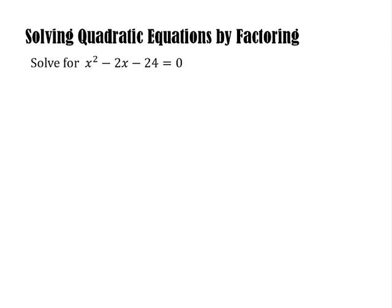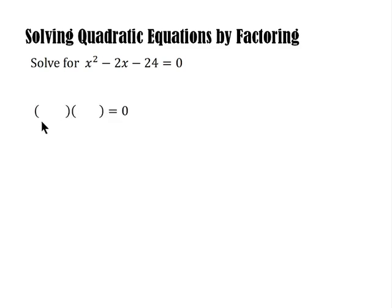Okay, solving quadratic equations by factoring. Solve for x squared minus 2x minus 24 equals zero. This is the quadratic equation and we are tasked to find the roots. We'll be using factoring — we could also solve this by completing the square or using the quadratic formula, but in this case we'll factor. We need to find two factors whose product equals zero.